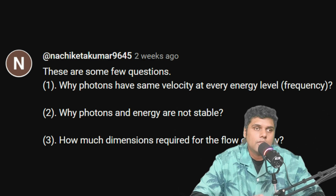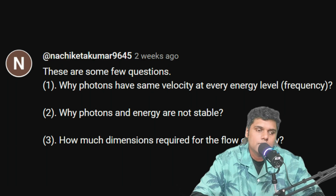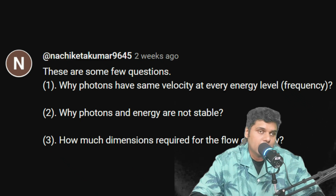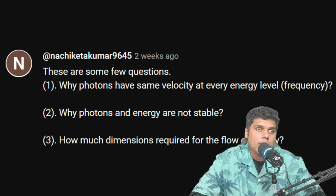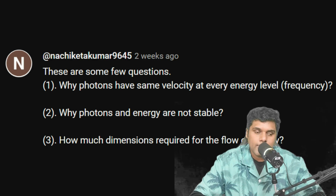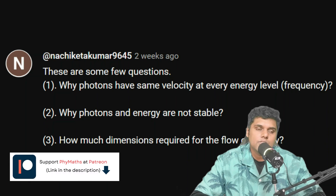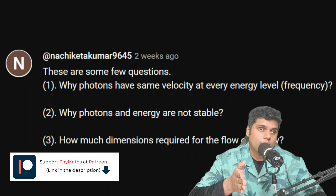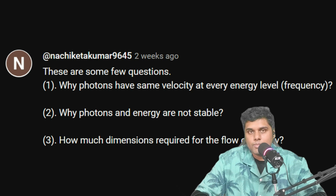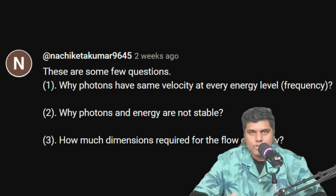The last part of that question was: how many dimensions are required for the flow of energy? My answer is that you need at least two dimensions — a time dimension and a space dimension. Without a time dimension the word 'flow' doesn't make sense, and without a space dimension it doesn't make sense either, because flow means something is going from one point in space to another. So you need at least one space dimension and one time dimension.